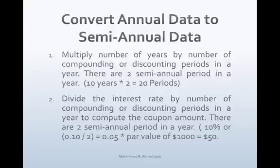Next, to compute the coupon amount, divide the interest rate by the number of discounting periods in a year. The interest rate is 10% and there are two semi-annual periods. 10 divided by 2 is 5%. Multiply the semi-annual rate by the par value: 5% times $1,000 is $50.